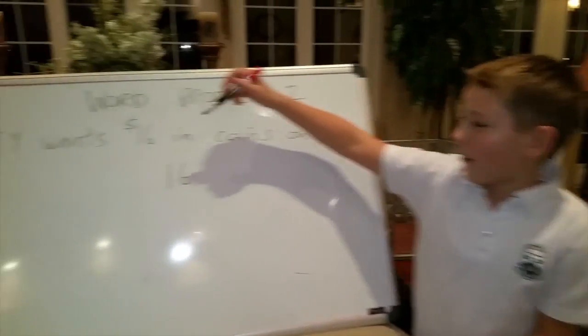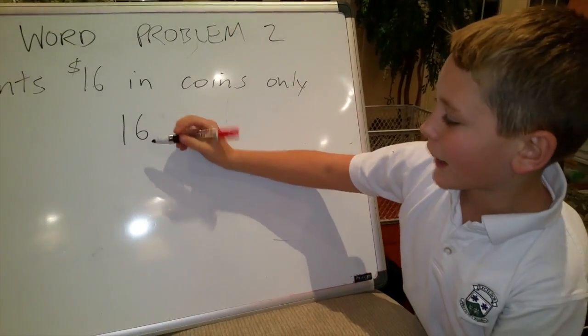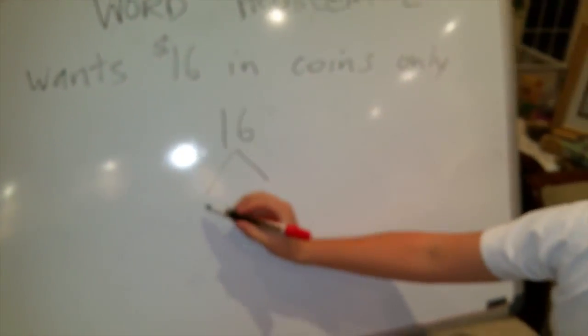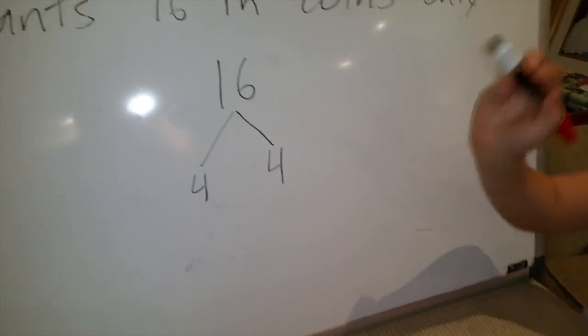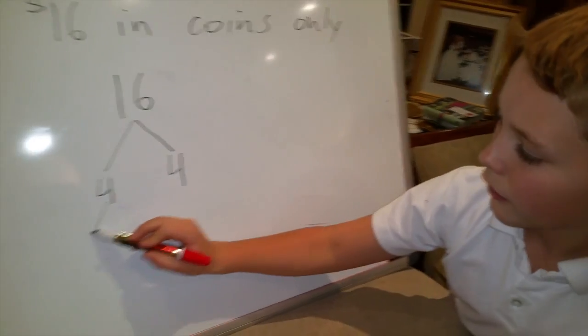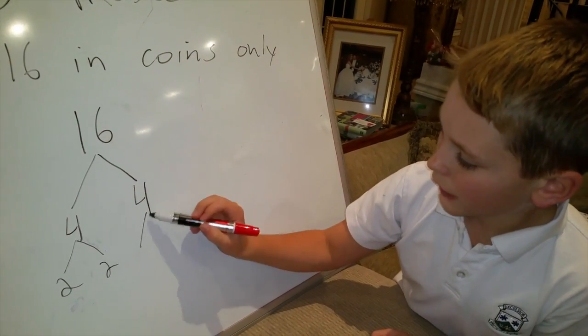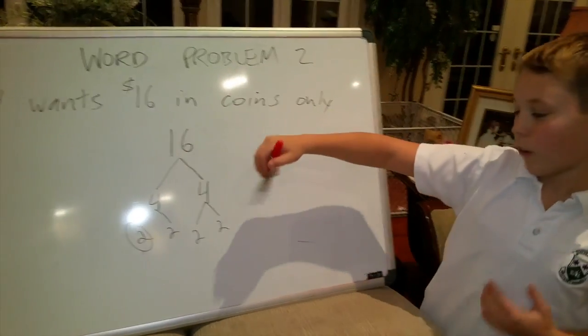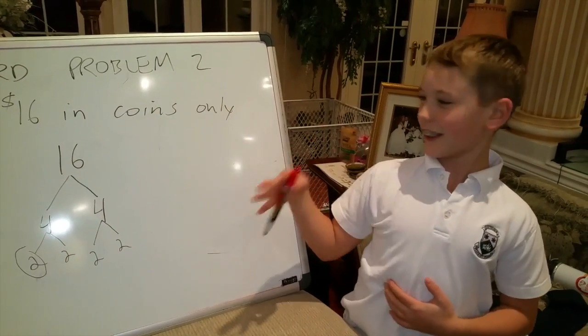Mathematical News. Ty wants $16 in coins only. So we're going to do factor trees to break it down. So what goes into 16? Well, 4 and 4 does. Then we're going to break 4 down even farther. And that goes to 2 and 2. Same for the other side because it's 4. Well, ladies and gentlemen, these 4 numbers here all equal to 16. And I get them all in coins. Thank you.